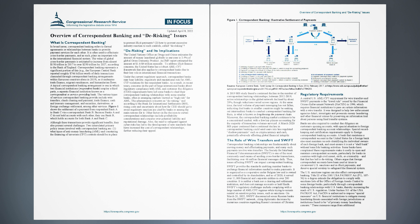The role of wire transfers and SWIFT: Correspondent Banking Relationships are fundamentally about moving money and effectuating payments, and many such payments involve wire transfers. The Society for Interbank Financial Telecommunication (SWIFT) is one of the most commonly used means of sending cross-border transactions, facilitating over 46 million financial messages daily. Thus, issues affecting SWIFT can impact Correspondent Banking. SWIFT provides the standards enabling member banks to exchange financial information needed to make payments. It is organized as a cooperative under Belgian law and is owned and controlled by its shareholders — as of 2020, it served over 11,000 financial and corporate entities in over 200 countries. It is neither a bank nor a clearing and settlement institution, and does not manage accounts or hold funds. SWIFT's regulatory challenges include complying with a large number of AML and CFT regimes while trying to remain neutral on sensitive policy issues, such as sanctions.